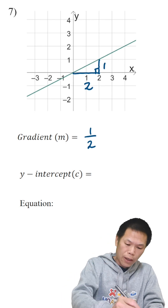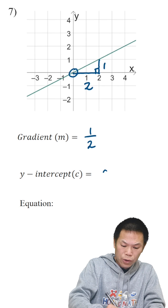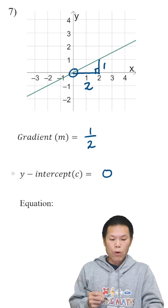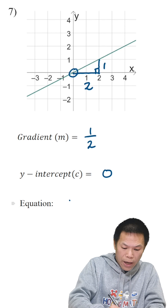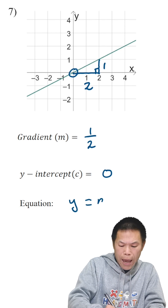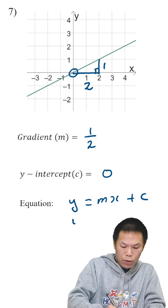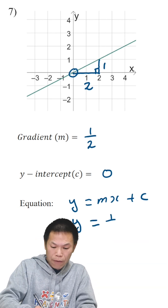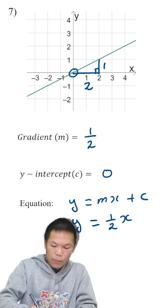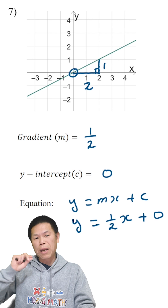The y-intercept is right here, so that means it's 0. So c is equal to 0. Therefore, the equation of the line is y equal to mx plus c. m is a half, so that means a half of x, and we add c. c is 0, so we plus 0, but we do not need to write plus 0.